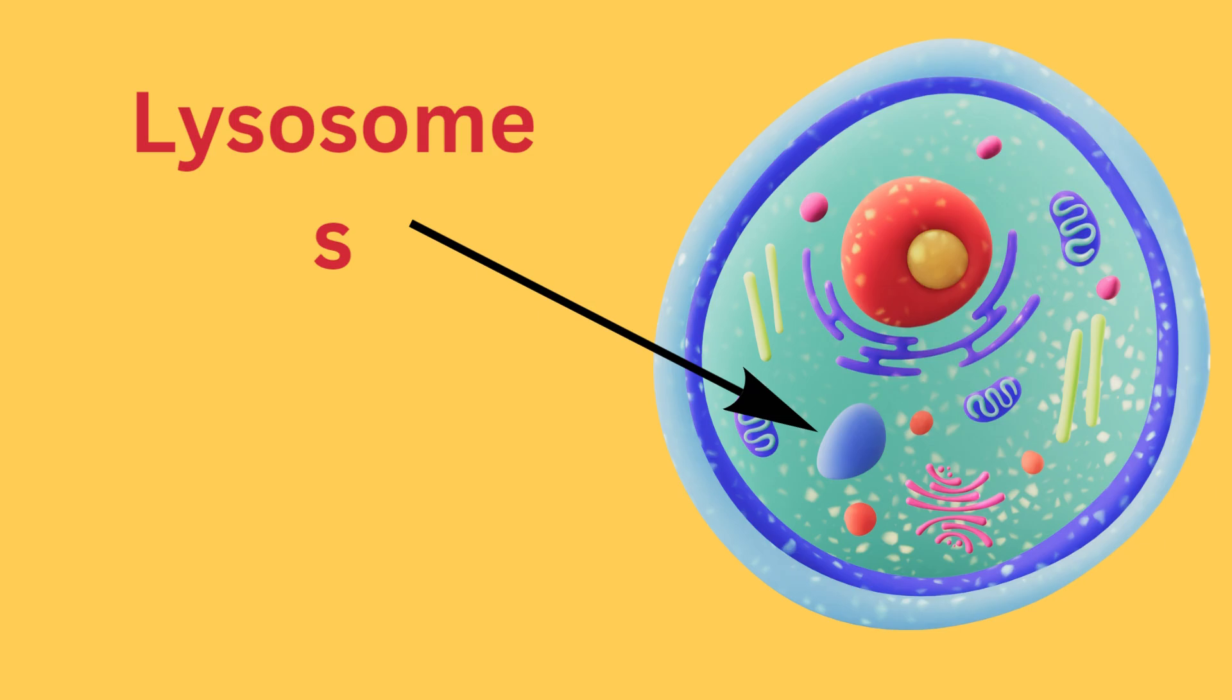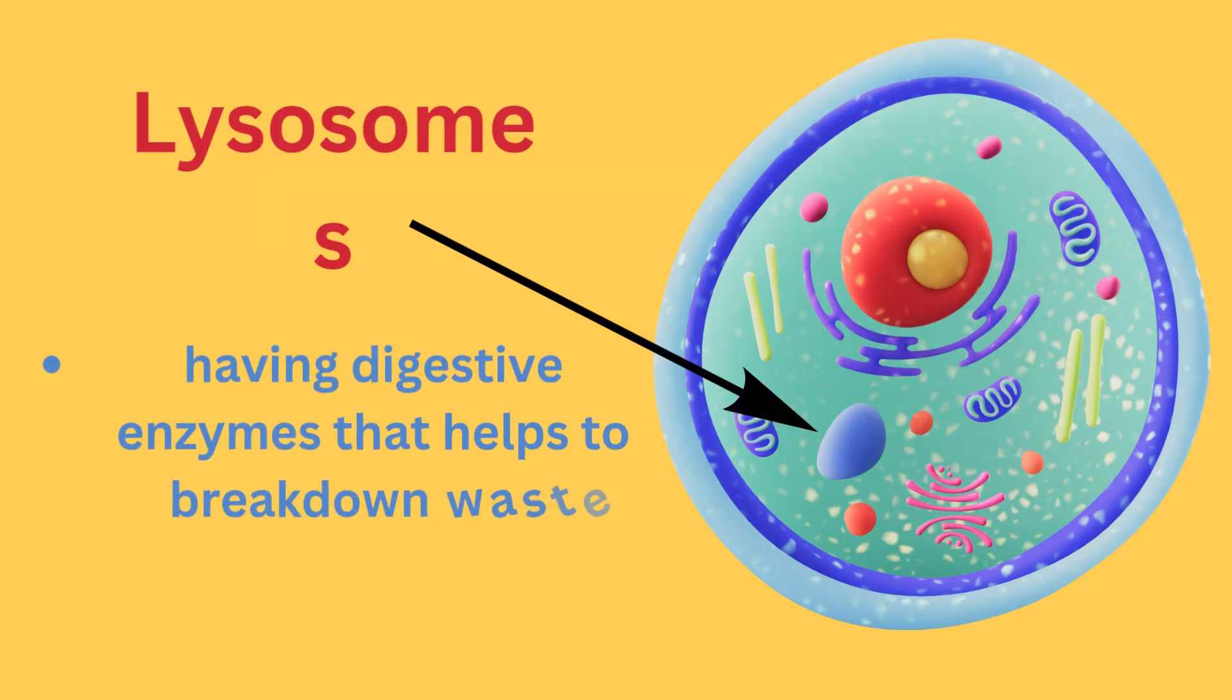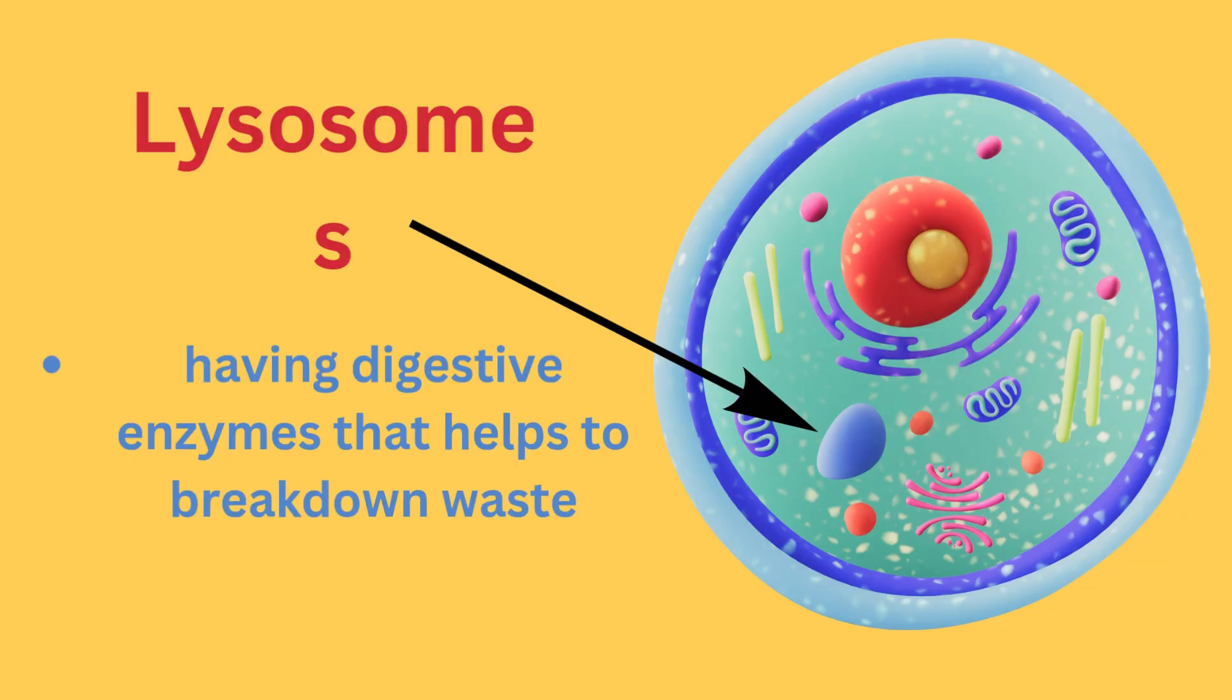This structure is lysosomes. They are mostly found in animal cells. They contain a variety of enzymes involved in breakdown of waste. They are like the cleaning crew of the cell.